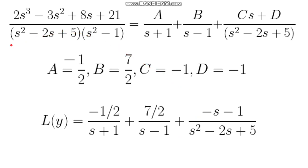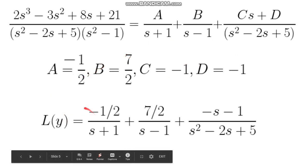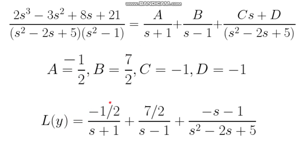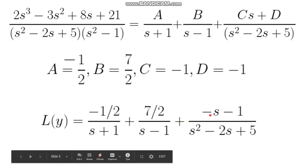Now our partial fraction decomposition will look like this: a, b, and we're going to have c s plus d. For my a, I got negative 1 half, b is 7 over 2, c is negative 1, and d is negative 1. We plug all those in and we're going to get negative 1 over 2 over s plus 1, plus 7 over 2 over s minus 1, plus negative s minus 1 over s squared minus 2s plus 5.